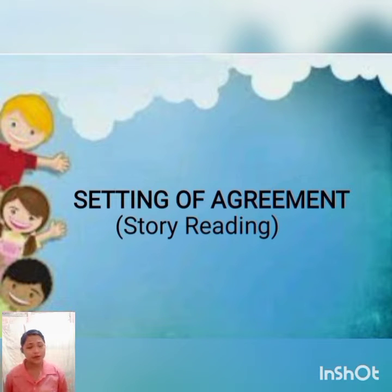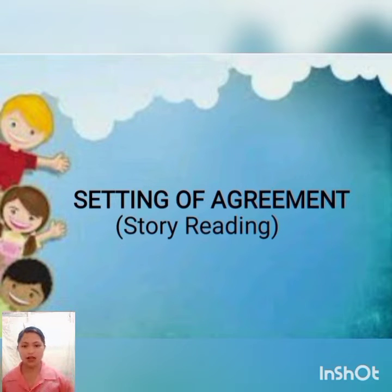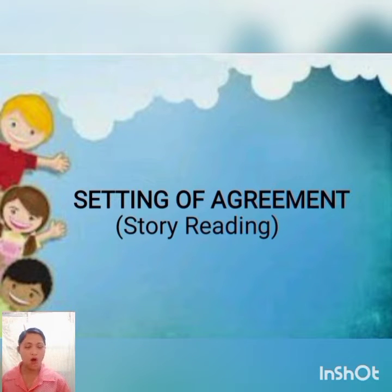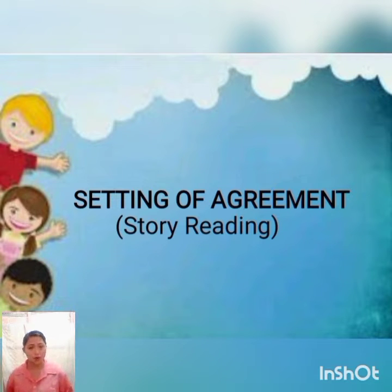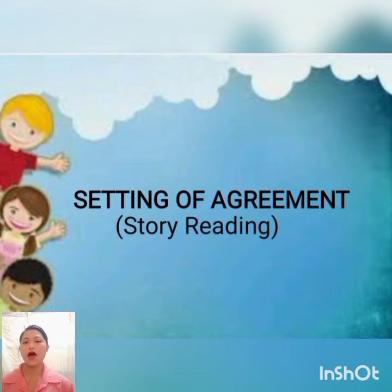Before we proceed to our topic for today, I would like to share a story first. This story is about the two childhood friends, entitled 'The Two Childhood Friends.' Since you are three rows in the class, the first row will read the first paragraph, the second row will read the second paragraph, and the third row will read the third and last paragraph. Did you get it, class?